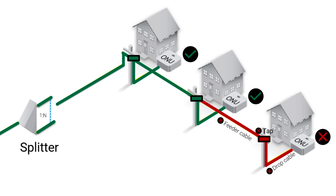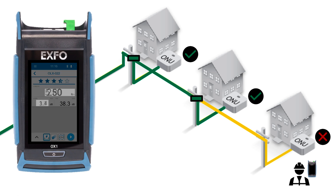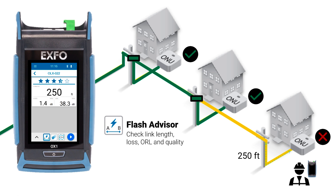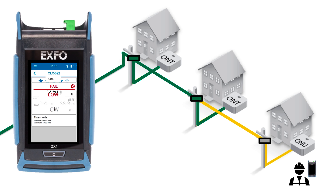Using the OX-1's Flash Advisor mode at the ONU, the drop fiber is identified as 250 feet in length from the tap to the ONU. The tech can check the RX level at the ONU to evaluate if there is low or no power being received at the ONU.